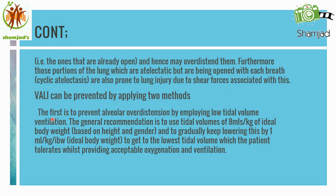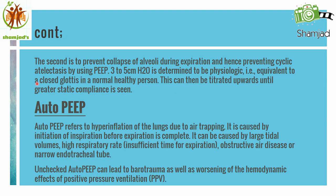VALI can be prevented by two methods. First, prevent alveolar over-distension by employing low tidal volume ventilation. The general recommendation is to use a tidal volume of 8 ml per kg of ideal body weight based on height and gender, and to gradually keep lowering this by 1 ml per kg ideal body weight to get to the lowest tidal volume the patient can tolerate whilst providing acceptable oxygenation. Second, prevent collapse of alveoli during expiration and hence prevent cyclic atelectasis by using PEEP. 3–5 cm H₂O is determined to be physiological, equivalent to a closed glottis in a normal healthy person, and this can be titrated upwards until greater static compliance is seen.